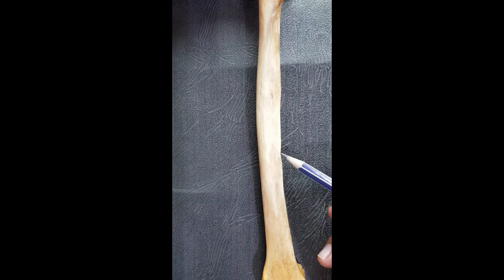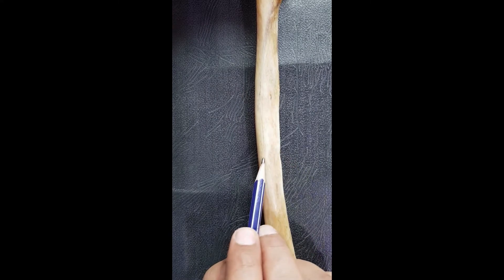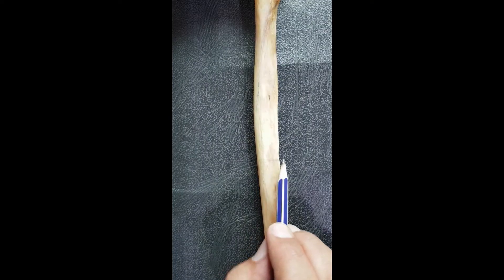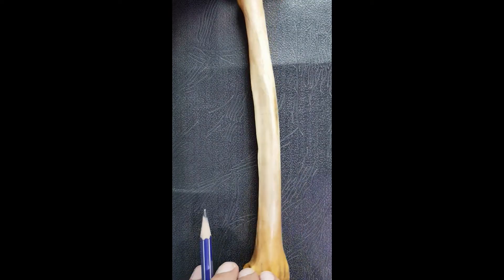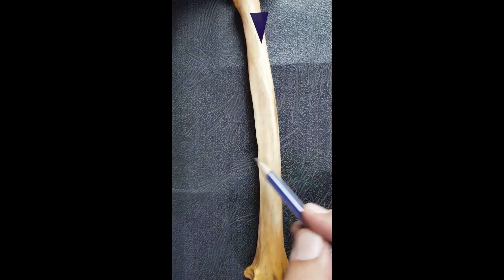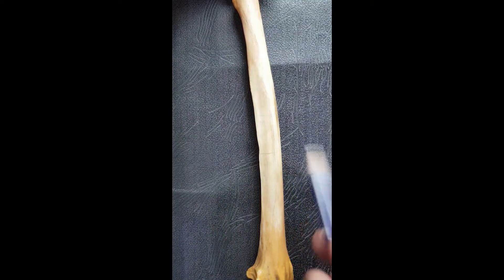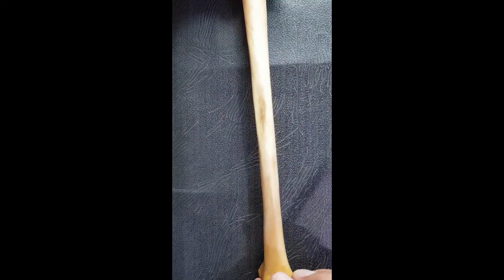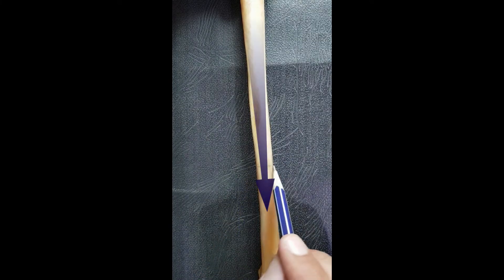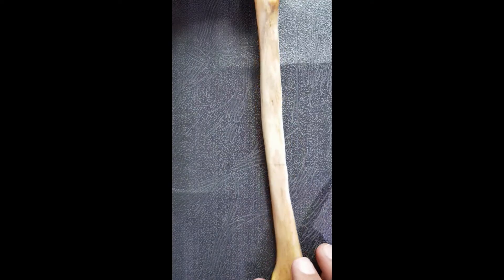Now the surfaces: between the medial border and the anterior border on the front we have the anterior surface; between the medial border and the posterior border we have the posterior surface; and laterally, between the anterior border and the posterior border, we have the lateral surface. This is about the radius bone.